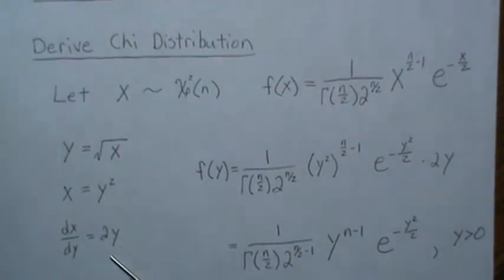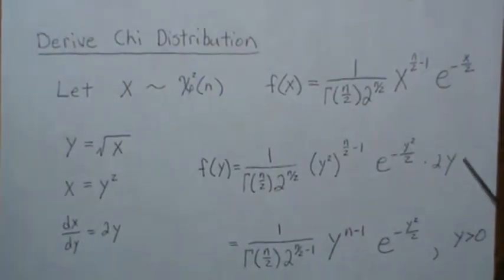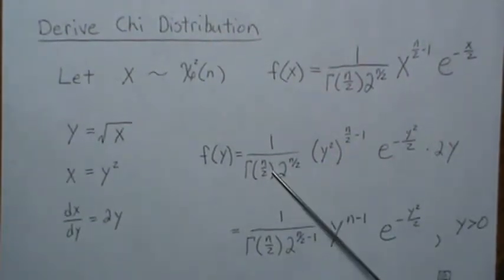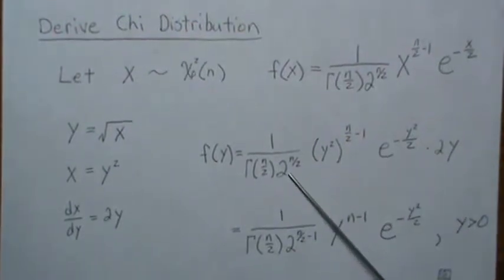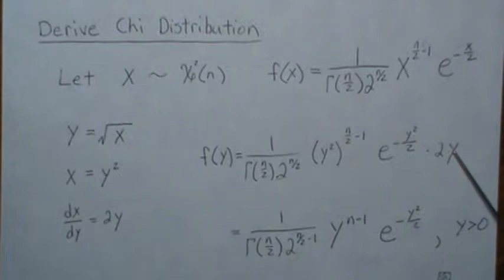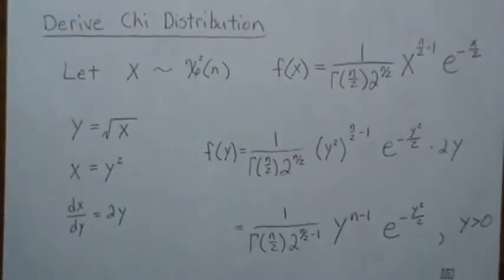This is the Jacobian of the transformation. We substitute X equals Y² wherever there's an X, and we get this times the Jacobian. Then we simplify: this 2 cancels with one of those, leaving this. This comes straight down, and the Y and this Y...